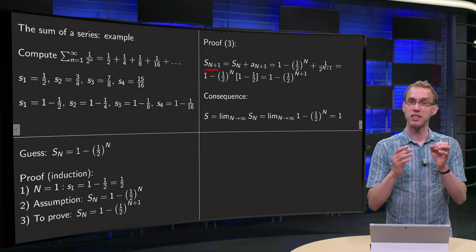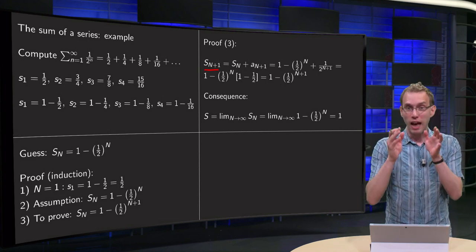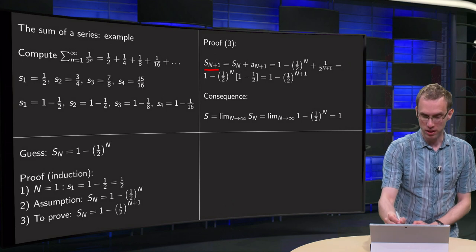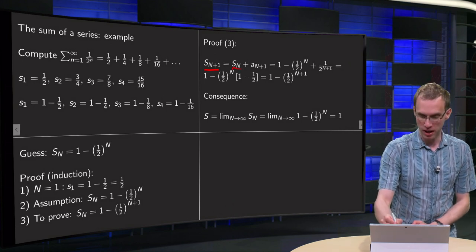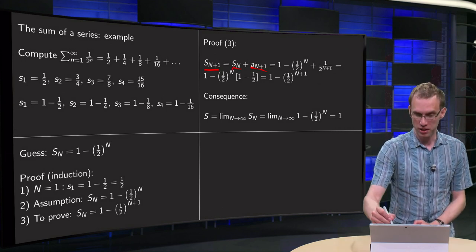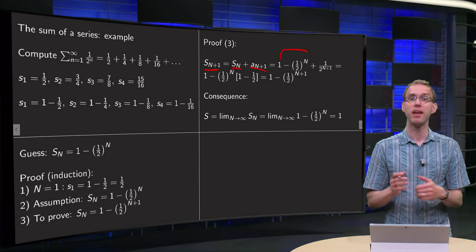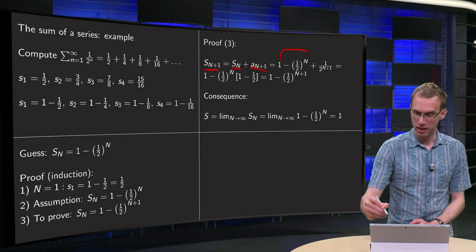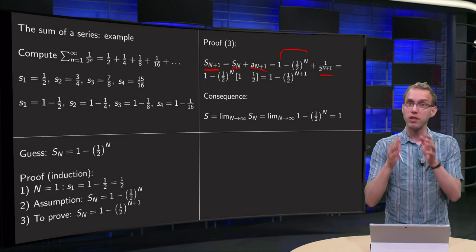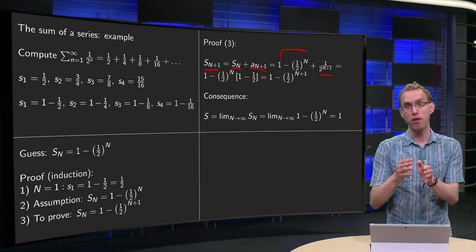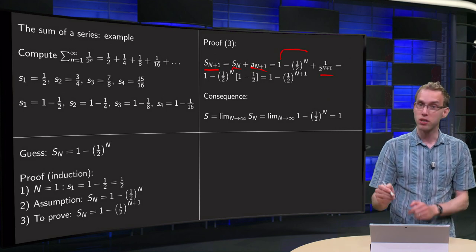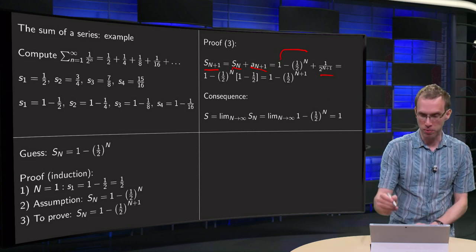S_{N+1}, the (N+1)th partial sum, is the Nth partial sum plus the next term — that is S_N plus a_{N+1}. Now we can use our induction assumption, which states that S_N equals 1 minus (1/2) to the power N. And we know a_{N+1} explicitly: that is 1 divided by 2 to the power N+1, which equals (1/2) times (1/2) to the power N. So we can factor out (1/2) to the power N.